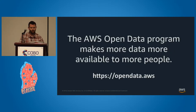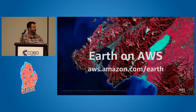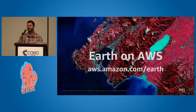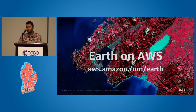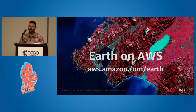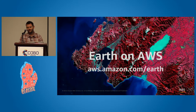Broadly speaking, the Open Data program makes more data more available to more people. Specifically around geospatial data, we've coalesced a lot of our efforts under something called Earth on AWS. It's where we bring together a number of our large geospatial datasets — terrain tiles, satellite imagery from different public missions, the OSM data, air quality data, and a number of other geospatial datasets. But it's not just the data — we also have customers speaking about how they're using the data. We think it's just as important to know how to use the data as it is to have access to it.